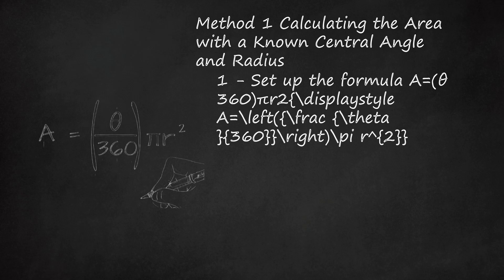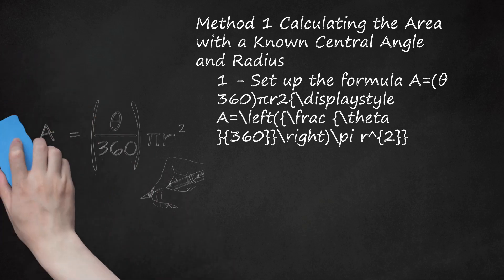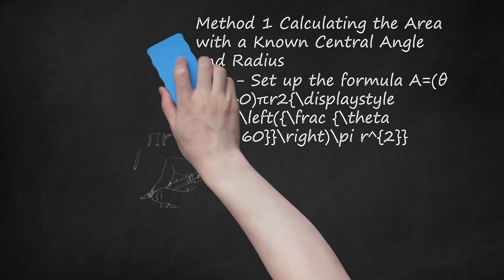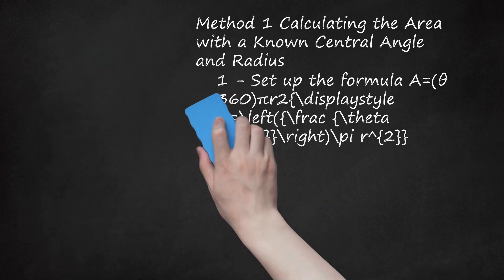Remember, the area of a circle is πr². When finding the area of a sector, you are really just calculating the area of the whole circle, and then multiplying by the fraction of the circle the sector represents. A circle is 360 degrees, so when you place the measurement of the sector's central angle over 360, it gives you the fraction of the whole circle.